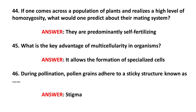44. If one comes across a population of plants and realizes a high level of homozygosity, what would one predict about their mating system? Answer: They are predominantly self-fertilizing.